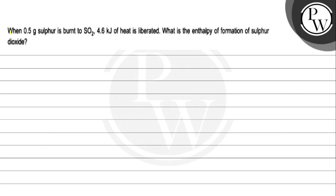Hello, let's see the discussion. When 0.5 gram sulfur is burned to SO2, 4.6 kJ of heat is liberated. What is the enthalpy of formation of sulfur dioxide?